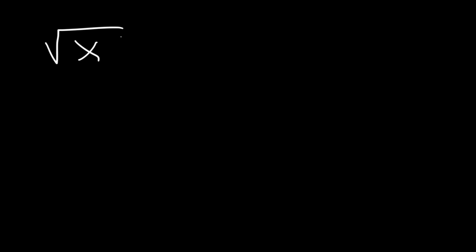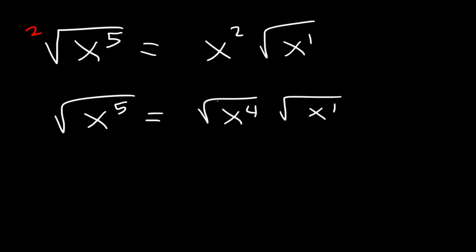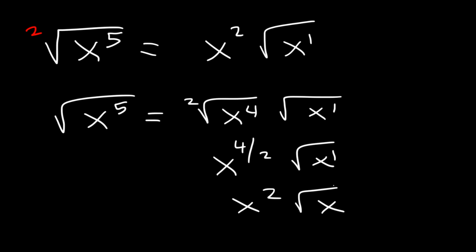Now what if we have variables? What's the square root of x to the fifth? Break this down into a multiple of 2. Ask yourself: how many times does 2 go into 5? 2 goes into 5 twice with 1 remaining — 2 times 2 is 4, and 5 minus 4 is 1. Alternatively, break down x to the fifth as x to the fourth times x to the first. The square root of x to the fourth is x², so your answer is x² times the square root of x.